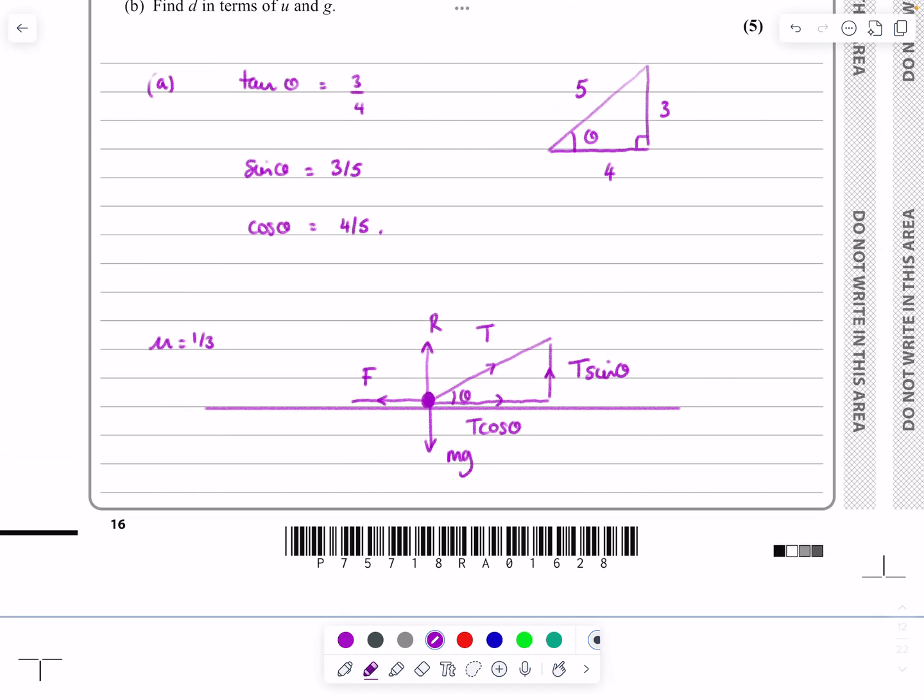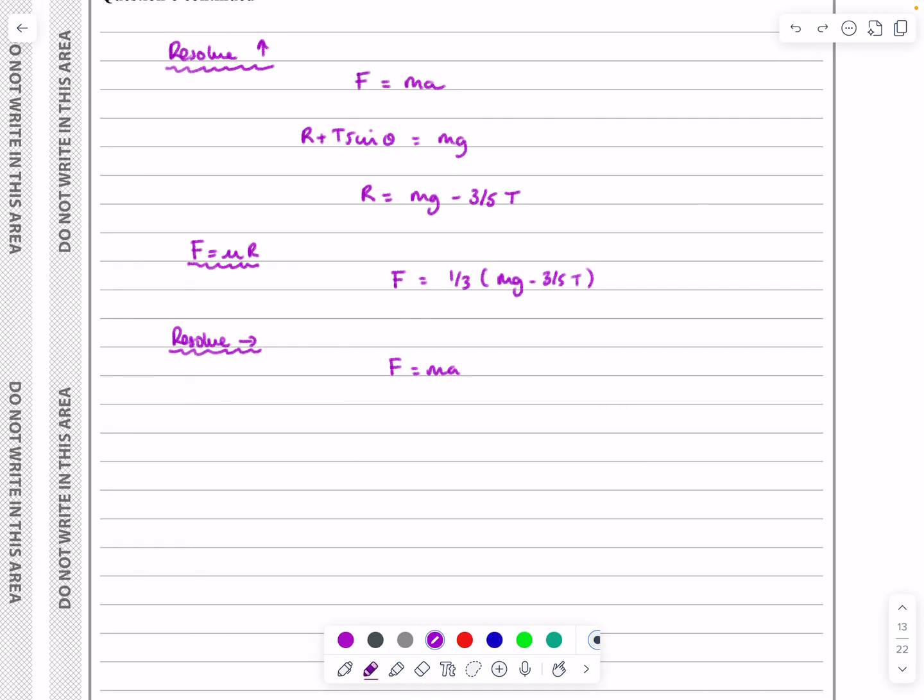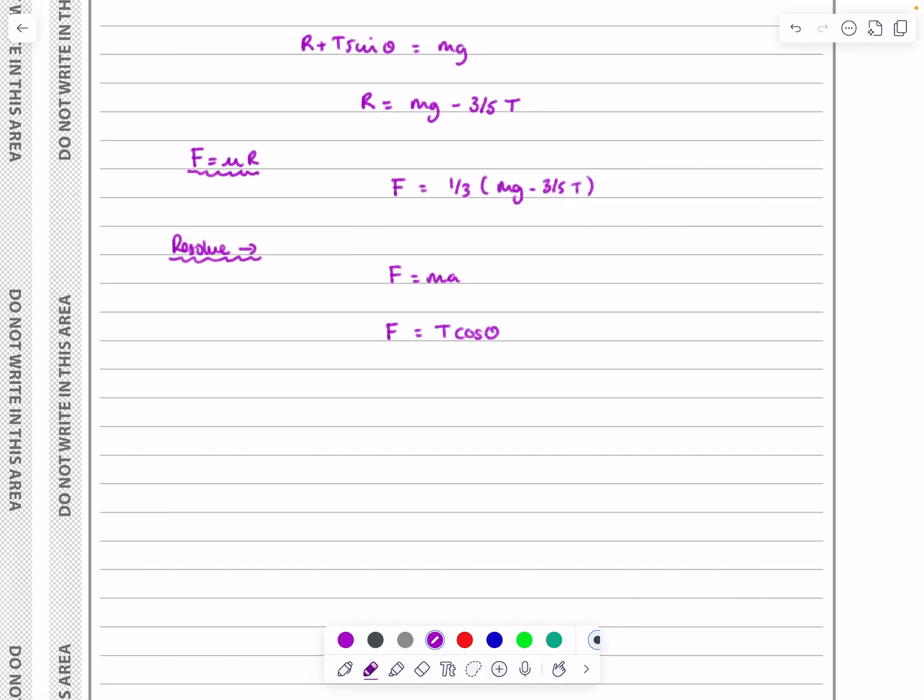F equals ma is now going to give me, looking horizontally, these two forces are in equilibrium because constant speed means no acceleration, which means the forces are in equilibrium. So in that case, F equals ma, there isn't an a, we're going to get F equals T cos theta. So F, we've got that, is one-third mg minus three-fifths T.